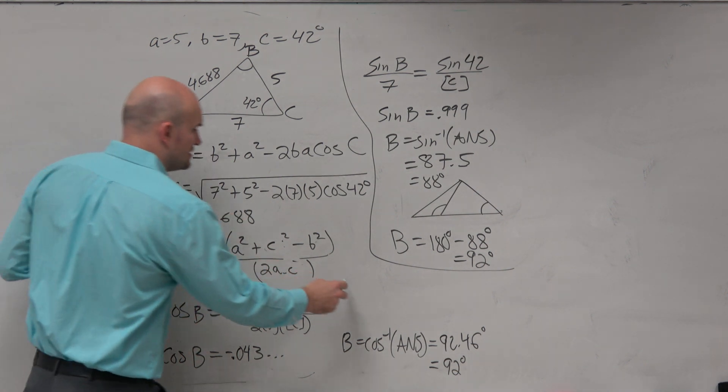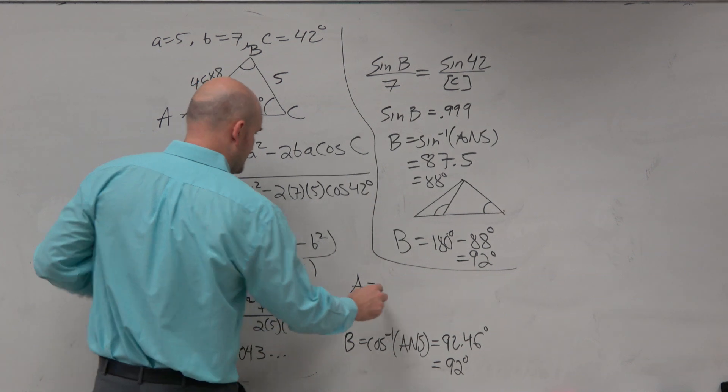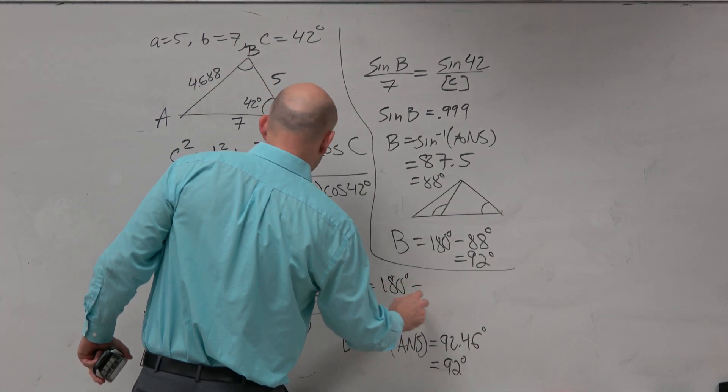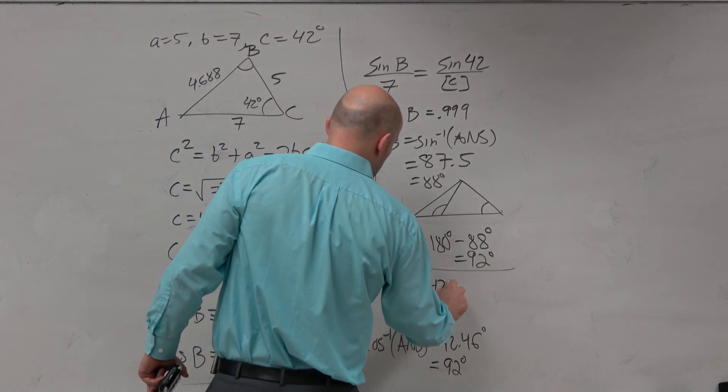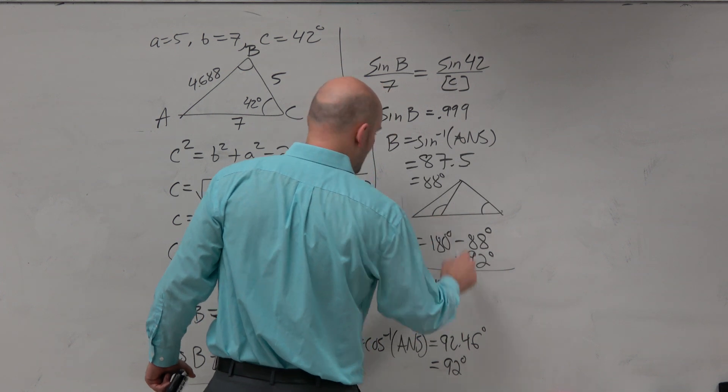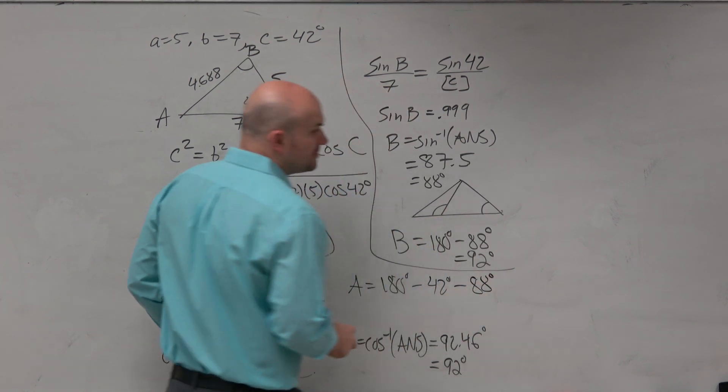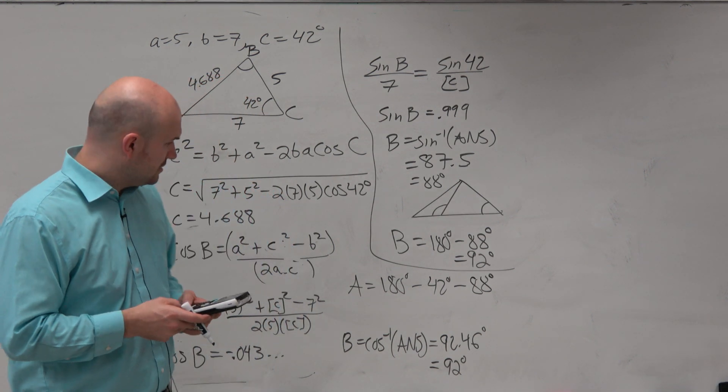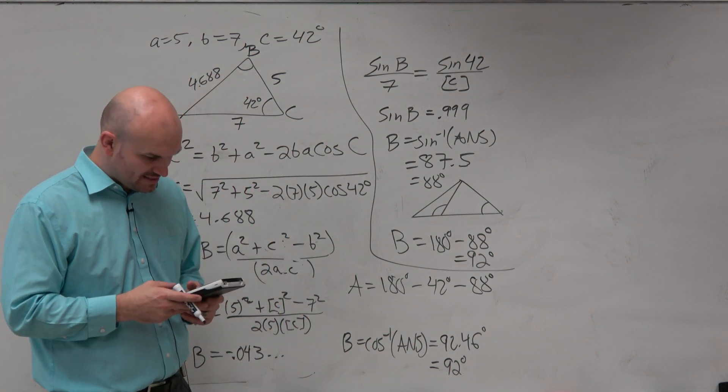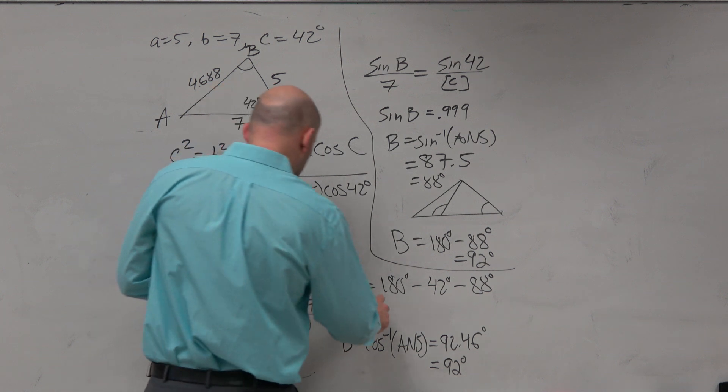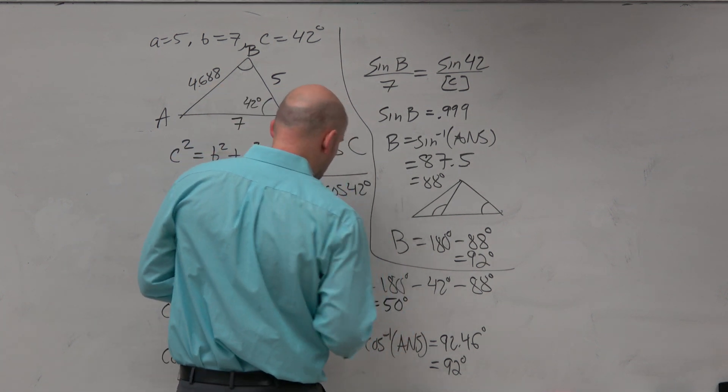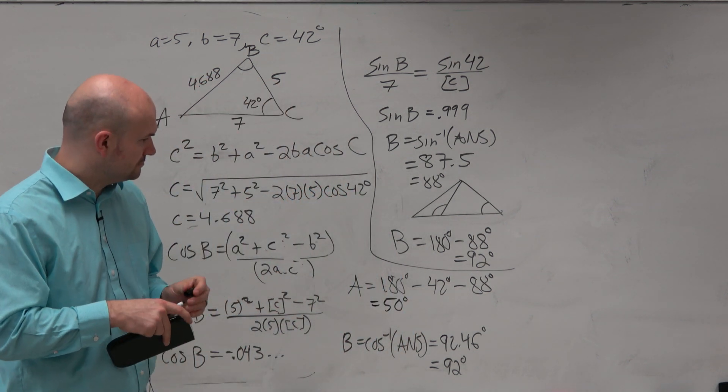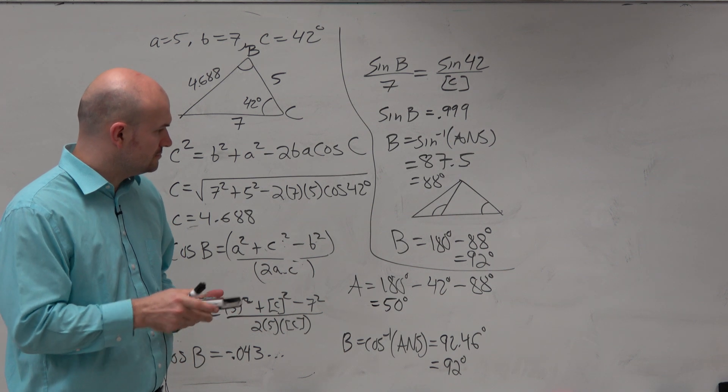Now, again, we still need to figure out what A is. And remember, A is going to be 180 minus 42 degrees minus 88. And again, I know I'm using rounded answers. So if everything's not perfect, that's OK. 42 minus 88. That's going to be 50.